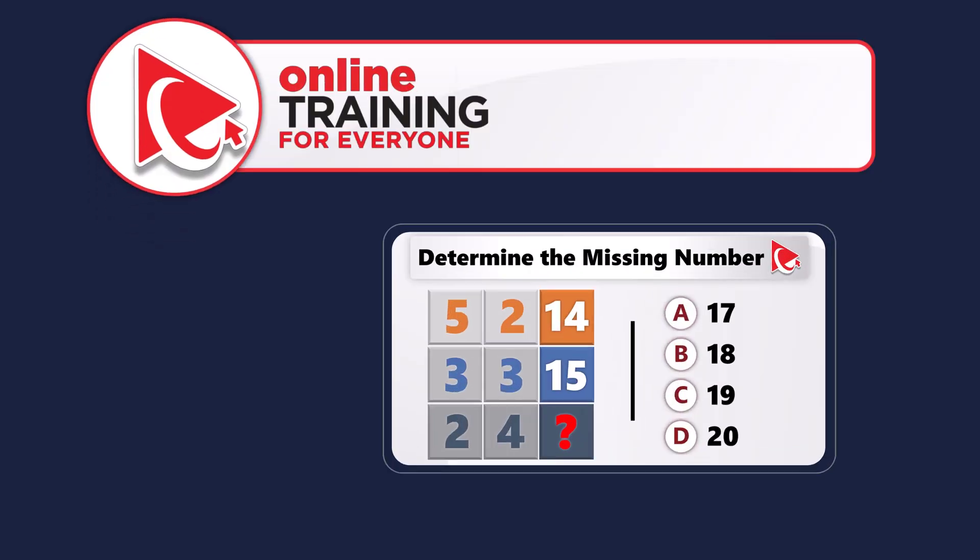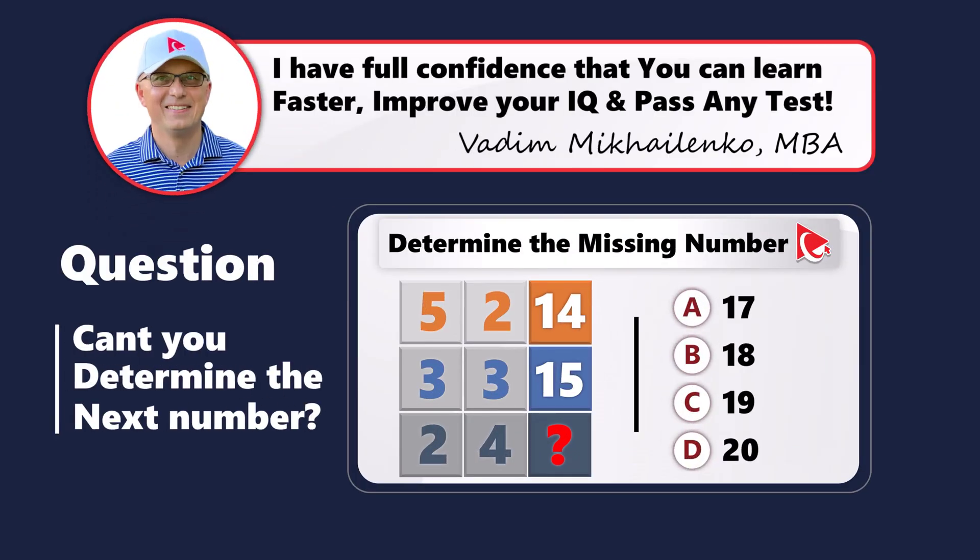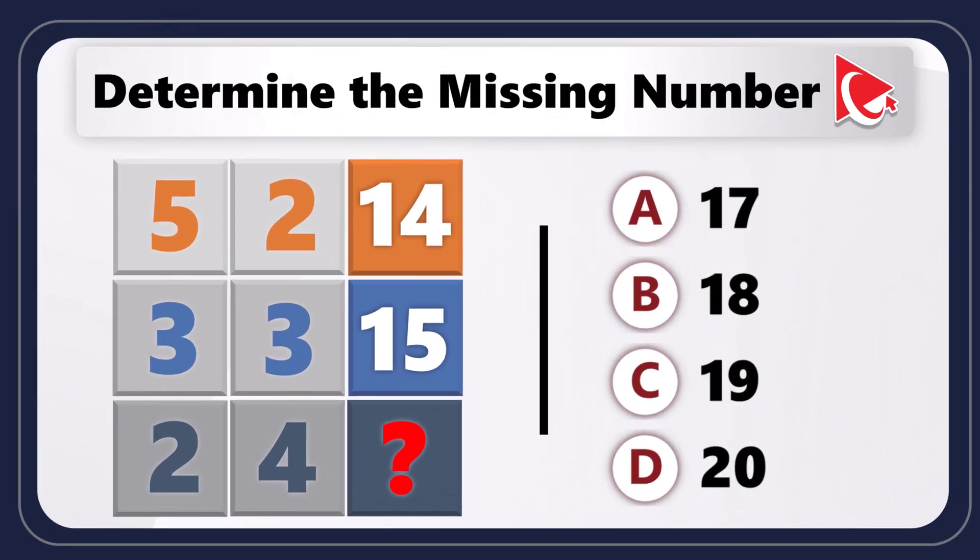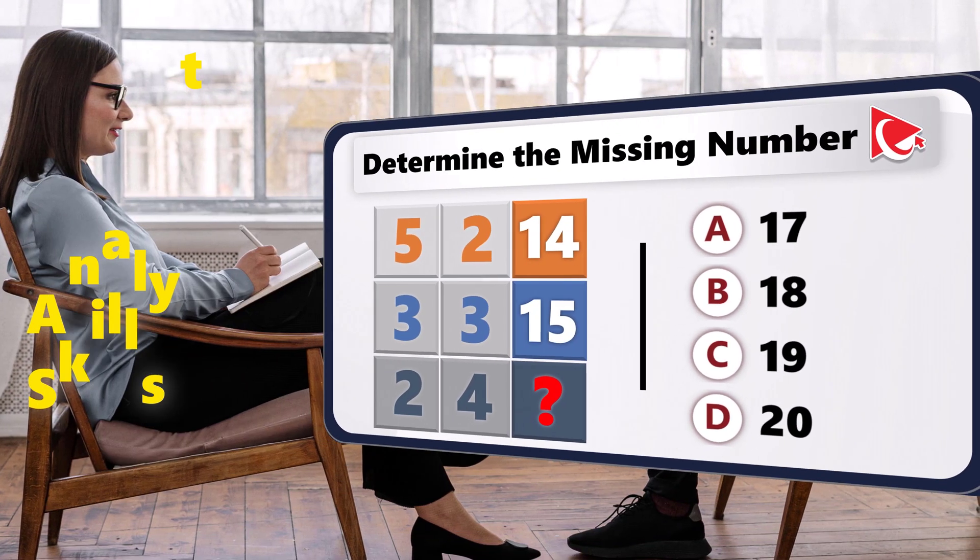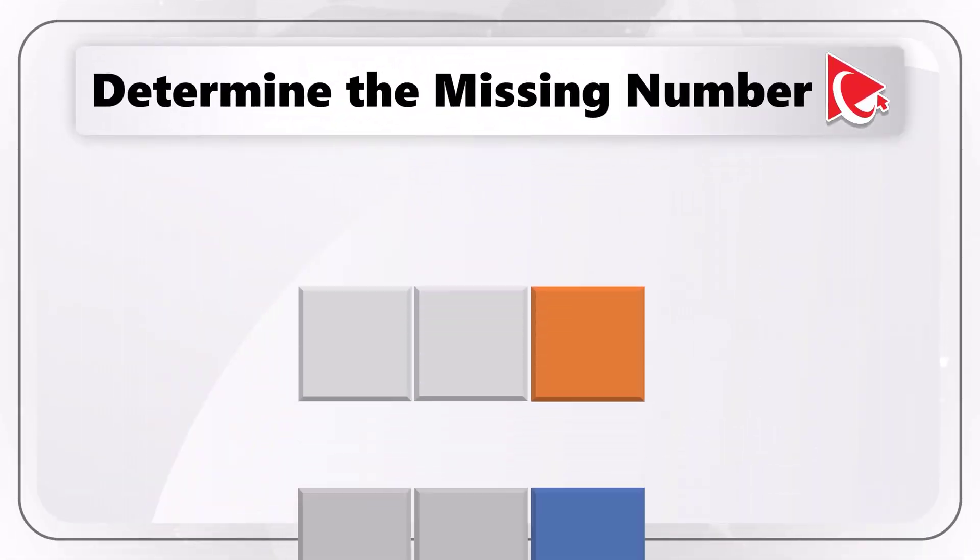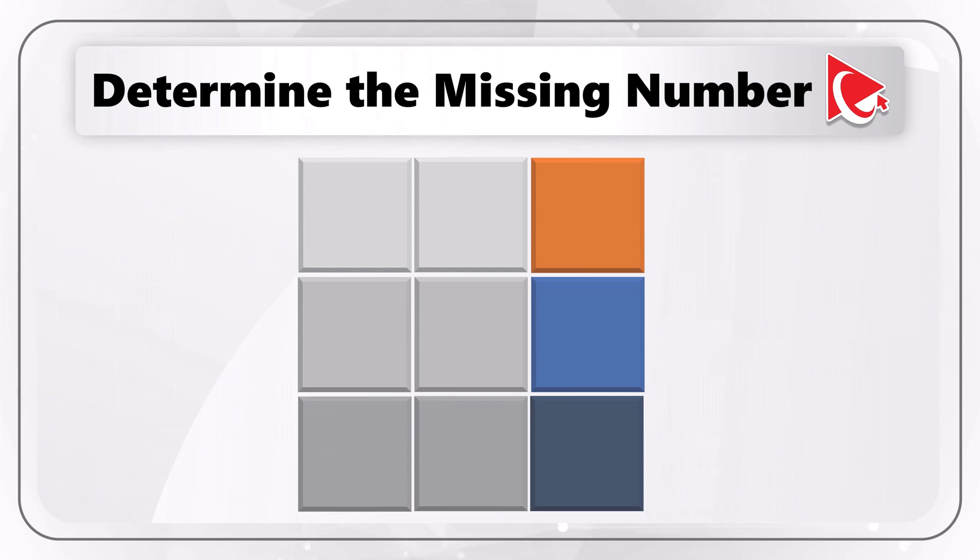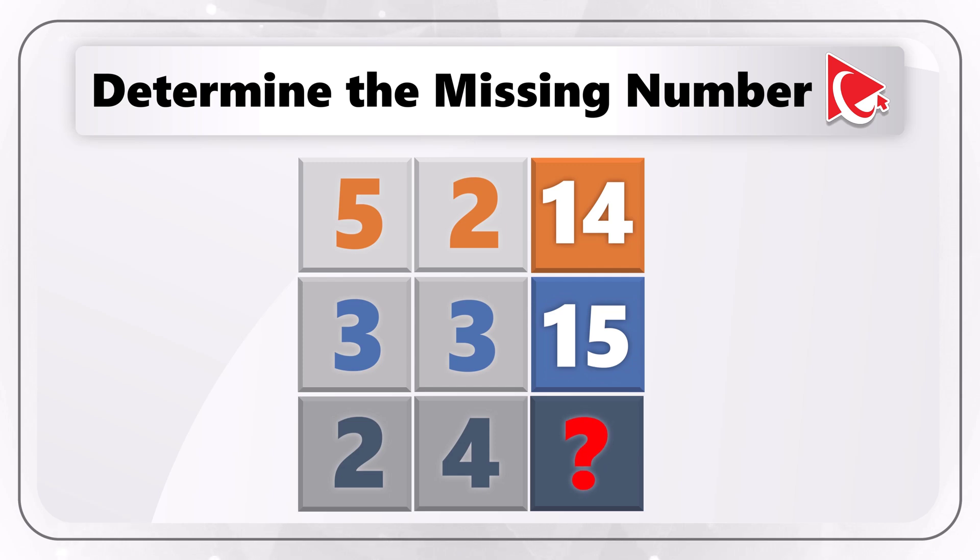I love this thought-provoking assessment test question. In addition to boosting your reasoning skills, solving it improves your analytical skills as well as attention to details. You are presented with a 3x3 matrix. The matrix has numbers 5, 2, 14, 3, 3, and 15, 2, 4, and then comes the missing number, which you need to calculate and select out of 4 possible choices.